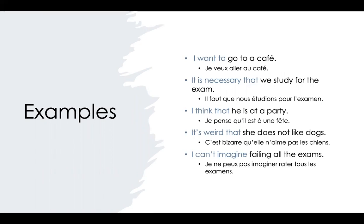First example: 'I want to go to the cafe.' This is going to be indicative because you are wanting to do something — je veux aller au cafe. Second: 'It is necessary that we study for the exam' — il faut que nous étudions pour l'examen. 'It is necessary that' fits into one of the subjunctive categories, which is why the subjunctive is being used here.